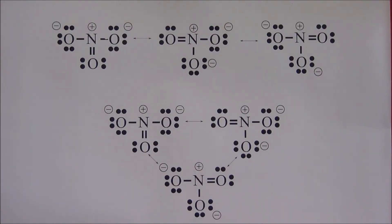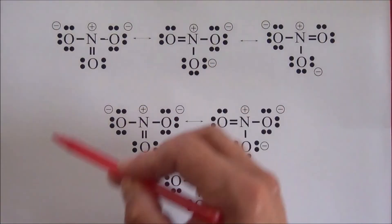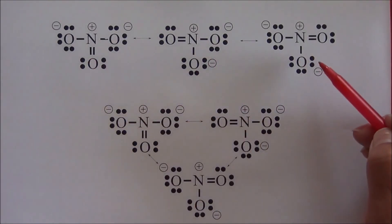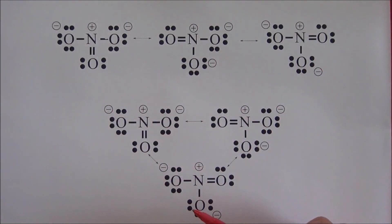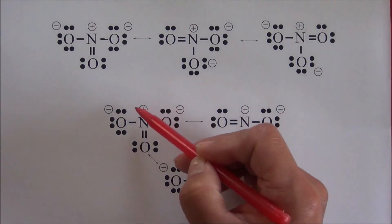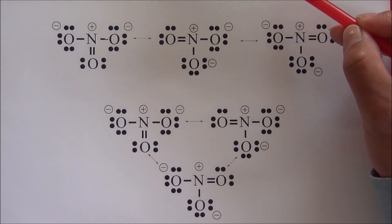If you are asked to give the resonance structures of nitrate ion during an exam or quiz, you can present your answer in two different formats: either in a linear format or in a circular format. It doesn't matter which format you use. Your answer must include all three resonance structures with all non-zero formal charges labeled correctly, and you also need to include double arrows between resonance structures. The double arrows tell us this represents one ion, not three different ions.